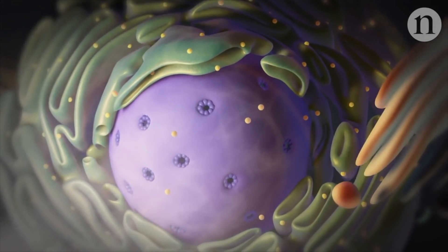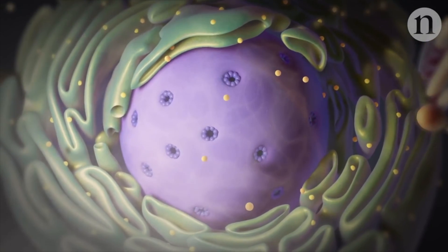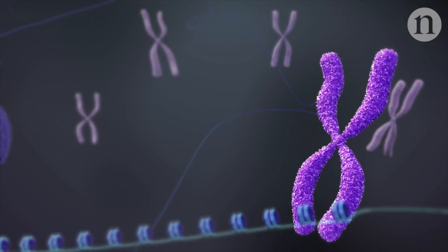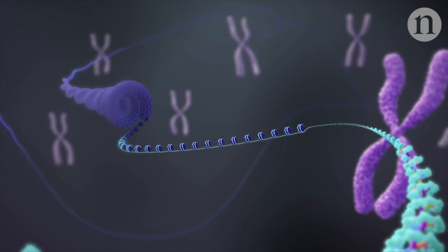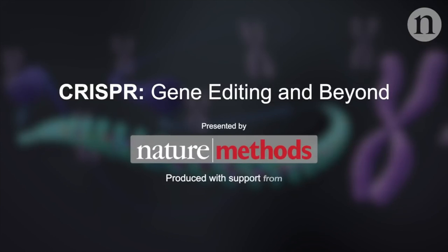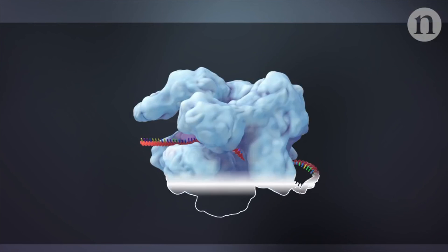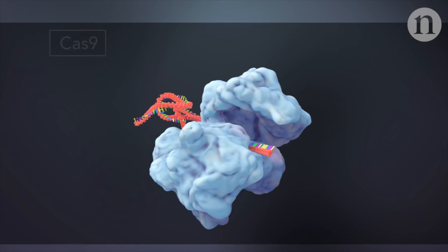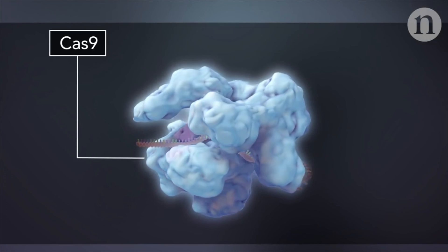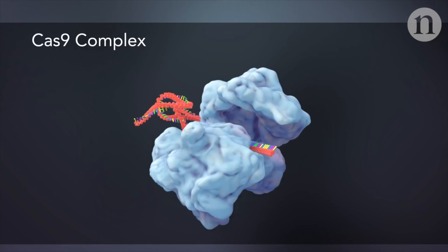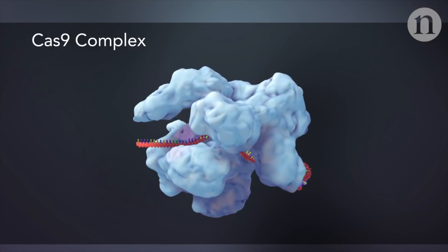The CRISPR-Cas9 system is a tool for cutting DNA at a specifically targeted location. The technique has already revolutionized gene editing, but scientists are always looking for new possibilities. Since being discovered in a bacterial immune system, CRISPR-Cas9 has been adapted into a powerful tool for genomic research. There are two components to the system: a DNA-cutting protein called Cas9, and an RNA molecule known as the guide RNA. Bound together, they form a complex that can identify and cut specific sections of DNA.